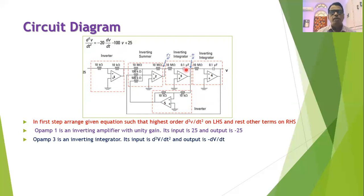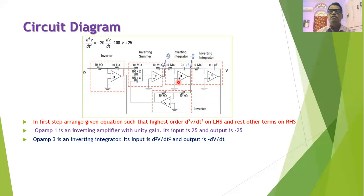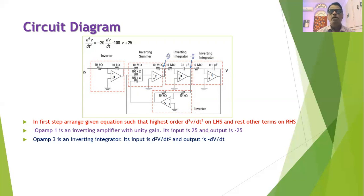Operational amplifier three is an inverting integrator circuit. Its input is d²V/dt² and its output is −dV/dt. The input and feedback resistances are arranged so that the output of op-amp 2, which gives us the term d²V/dt², is fed as input to operational amplifier 3.